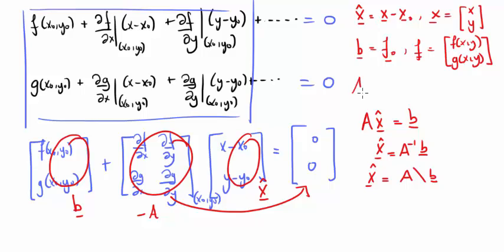And we can put a equals minus j, where j is the matrix of derivatives evaluated at x0, y0. The matrix j has a special name. It's called the Jacobian.